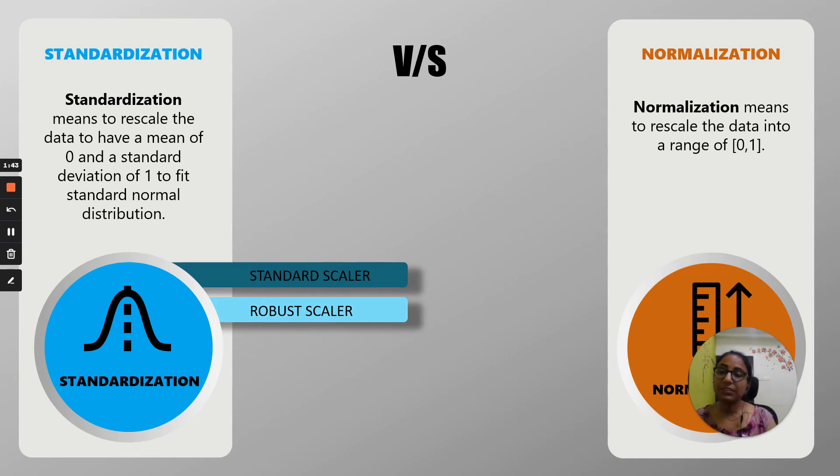Next is the robust scaler. In standard scaler, if you have outliers it would be impacted by outliers, but robust scaler will take care of outliers. If you have too many outliers, you can go with robust scaler. Next is quantile transformer. It is also a standardization technique. It uses quantile value, so basically your IQR value is used over here.